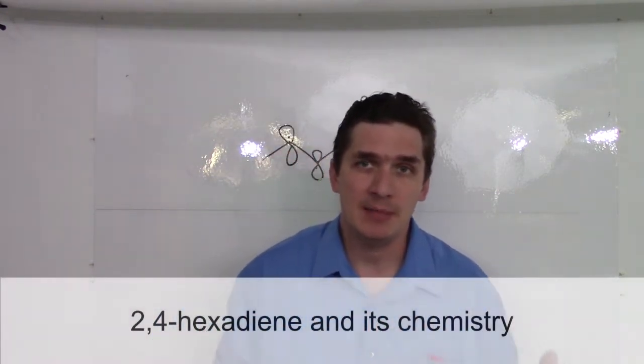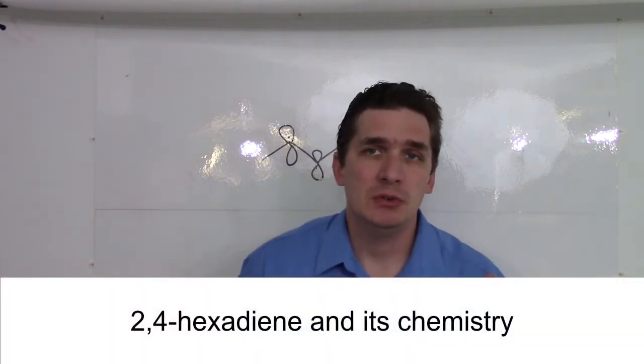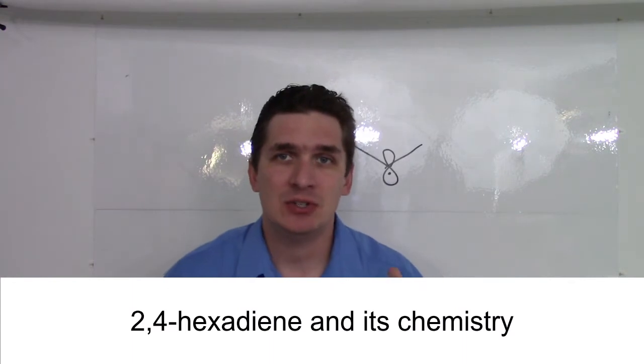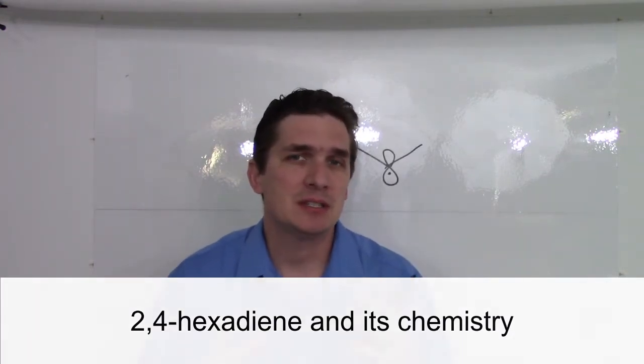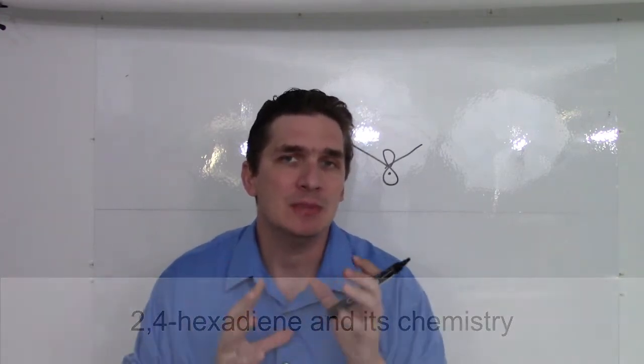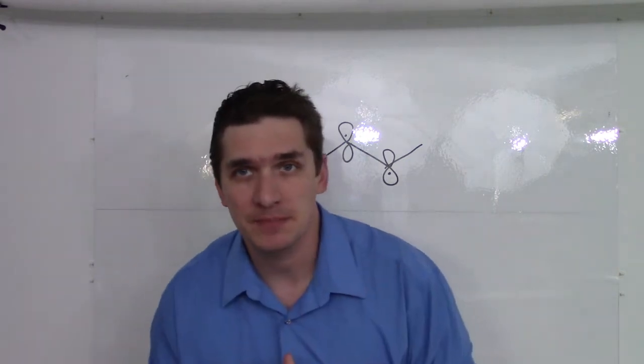Now, in the previous video, I talked about where pi bonds come from as a result of molecular orbital theory, but when we go to conjugated dienes, trienes, whatever, we're going to find that this simple idea of pi bonding really stops making sense, particularly in the context of molecular orbital theory, which is what it's trying to borrow from.